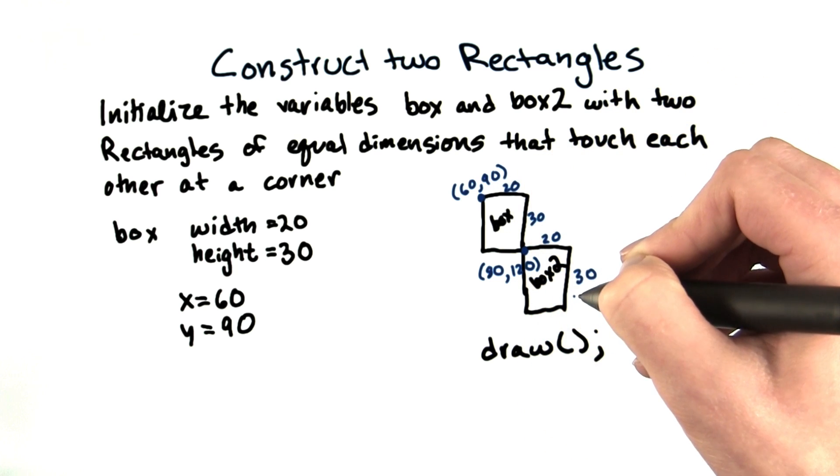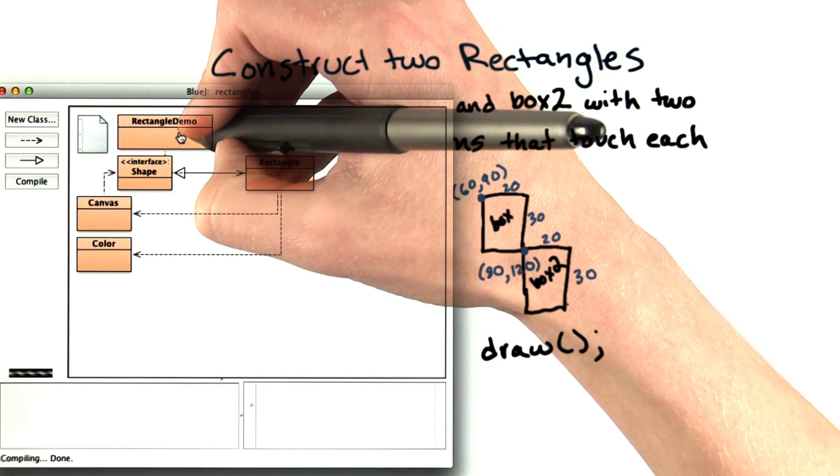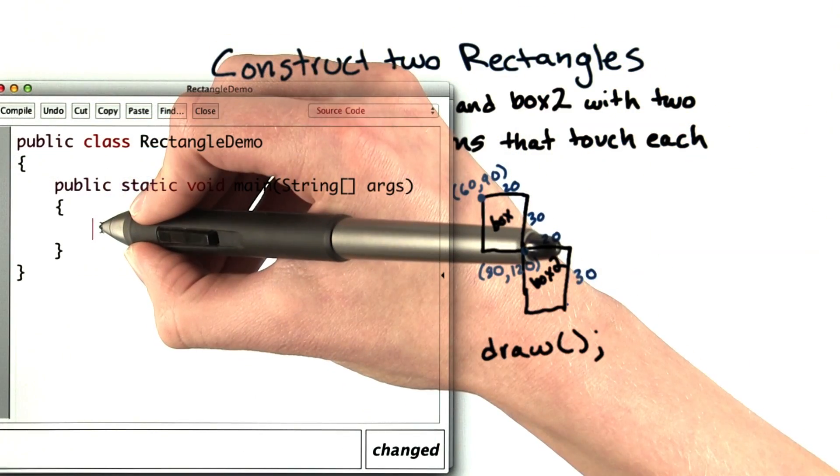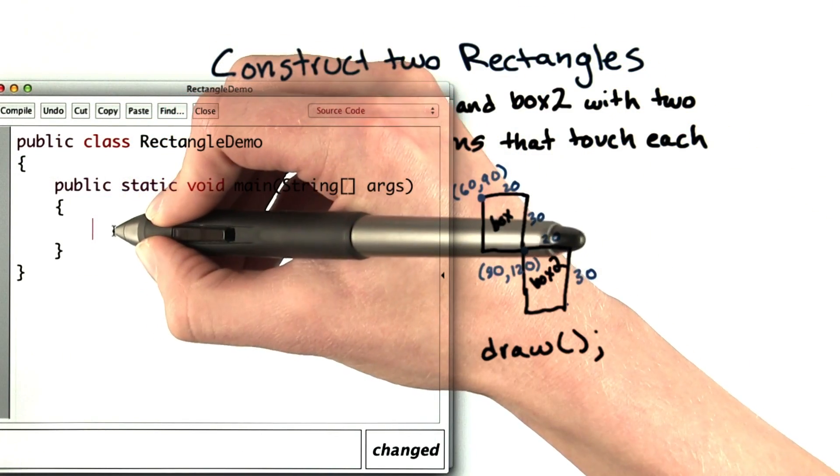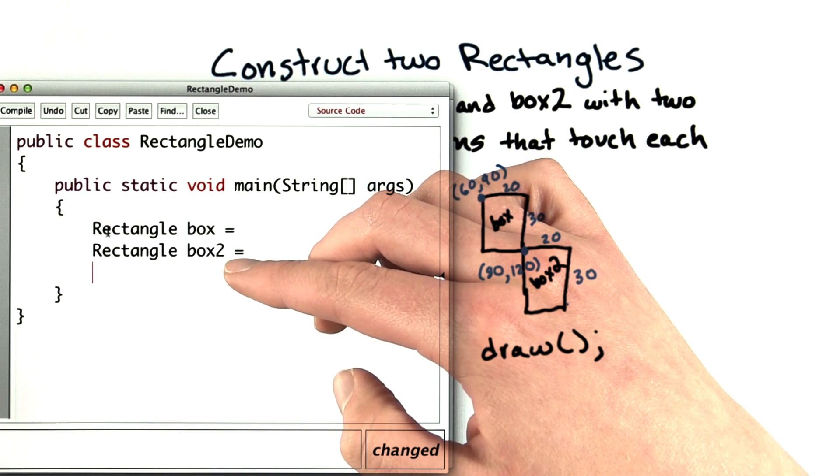Now I have all of the specifications, and I need to put them into the constructor calls. So in the BlueJ project, I'll edit the code for rectangle demo. Open editor. And in the main method, I'm going to create two rectangles, box and box2. And then once I've created them, I'm going to draw them.